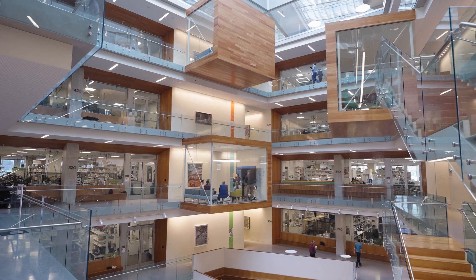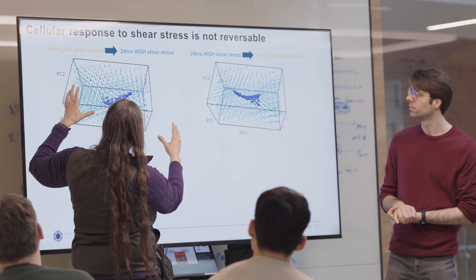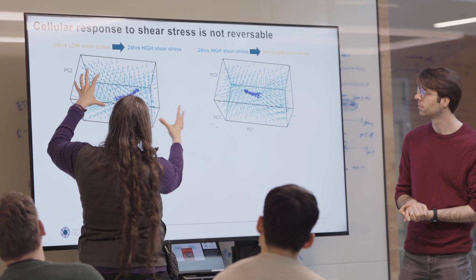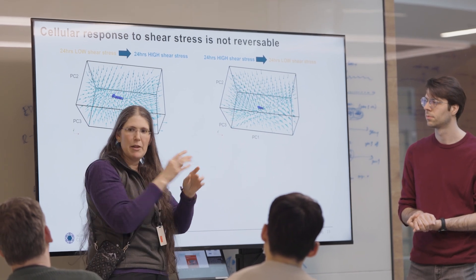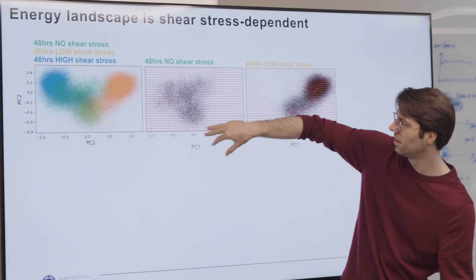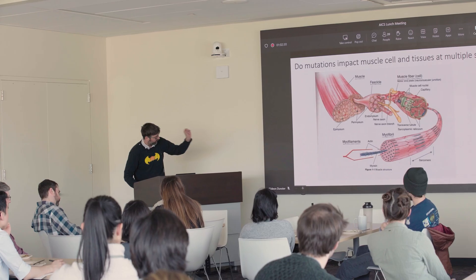How we bring these different technologies together is a big challenge right now in the field. Not only do we want to know how the genes are changing and the proteins are changing, but we want to know where in the cell those changes are happening and how that affects the cell — what it does next. Do they die, do they grow, do they become a different cell type?